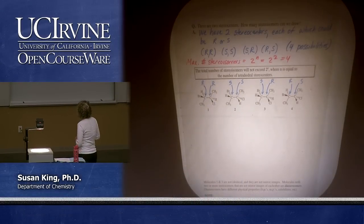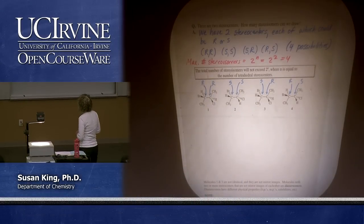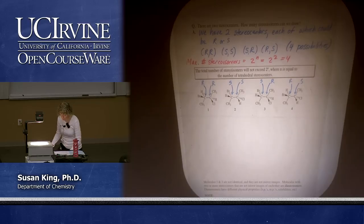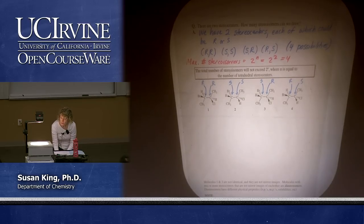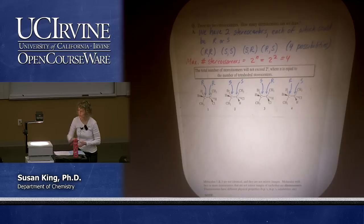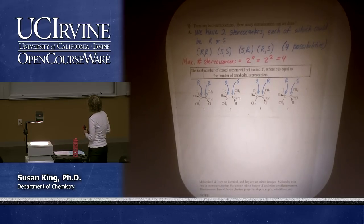Last time we left off we were talking about molecules with two stereocenters. If you have molecules with two stereocenters the maximum number of stereoisomers you can have is 4. We drew all four and then we were assigning configuration to each of the molecules 1, 2, 3, and 4.